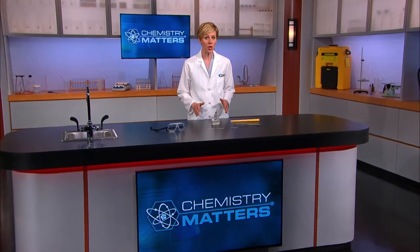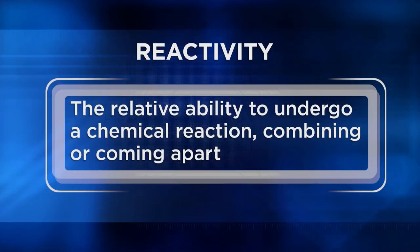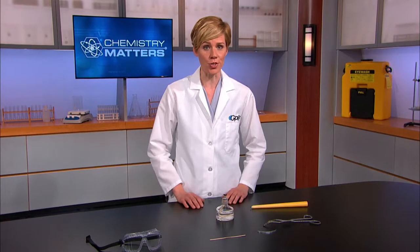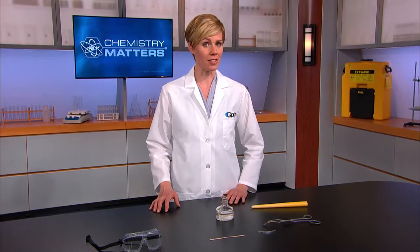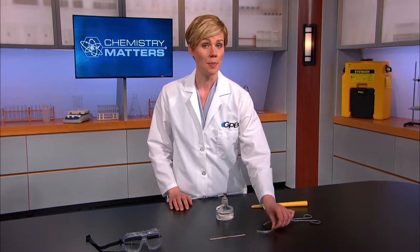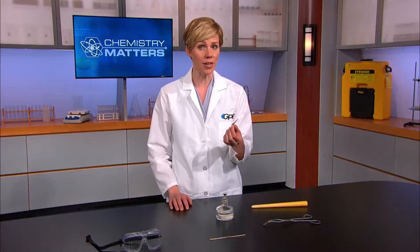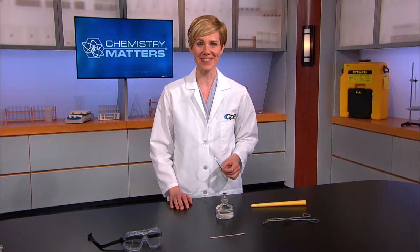One of the most important chemical properties is reactivity — the relative ability to undergo a chemical reaction, combining or coming apart. A lot of substances readily react with other substances. Many metals are highly reactive, combining quickly with other substances to form compounds. For example, magnesium reacts very quickly with oxygen to produce magnesium oxide, as you're about to see.